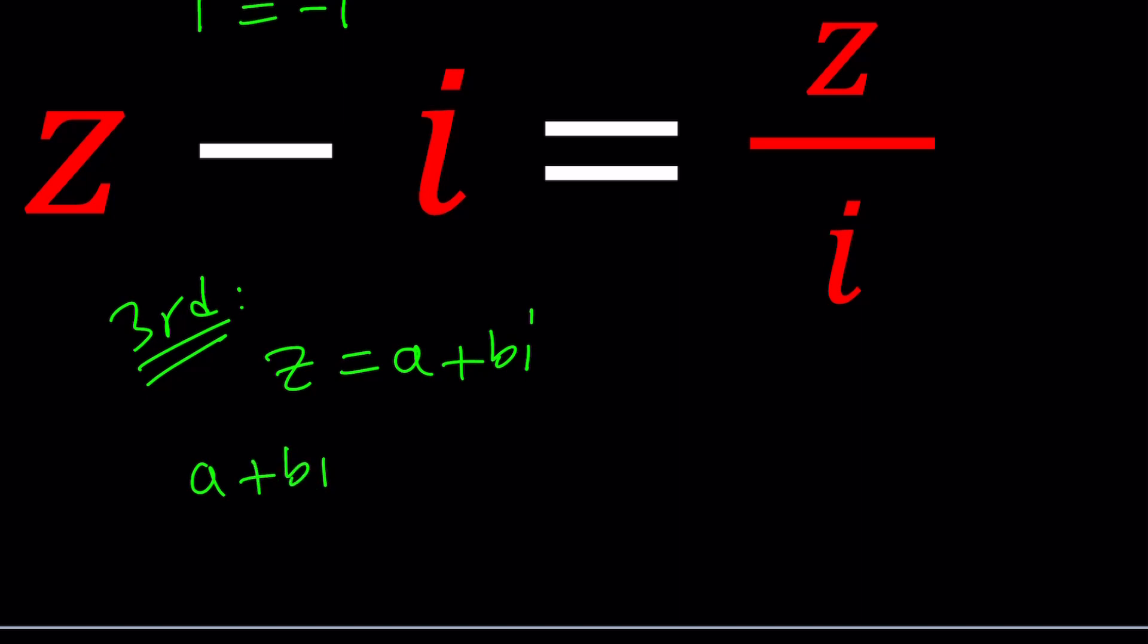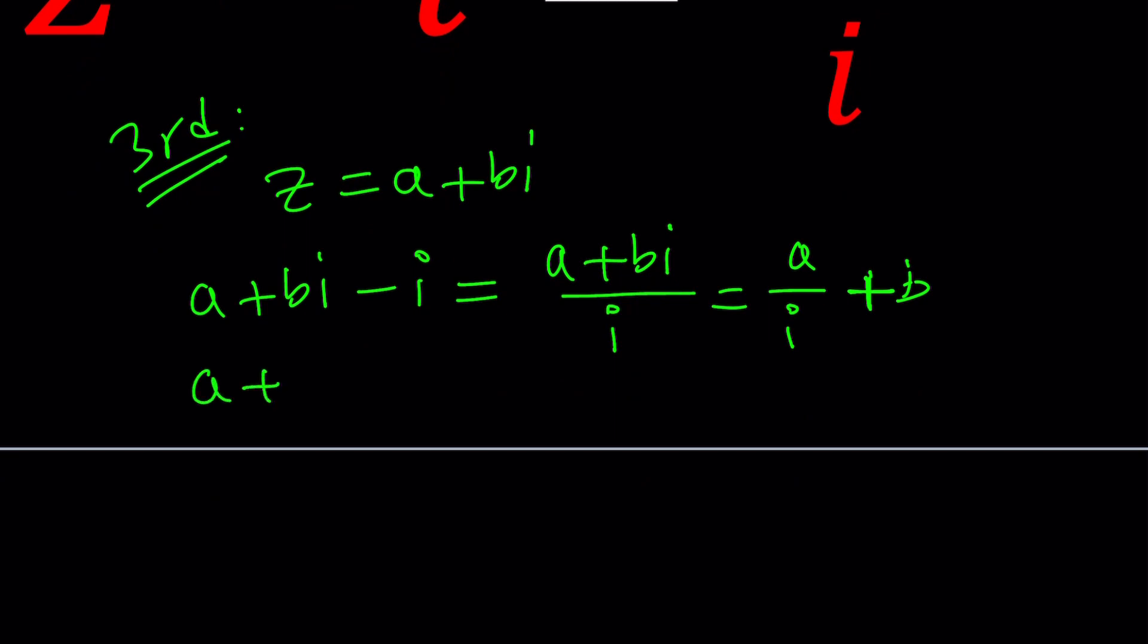A plus B I minus I equals A plus B I divided by I. You can either split this into two pieces or multiply by I. I'm going to go ahead and split it up. A over I plus B. And then we can arrange the imaginary parts here.